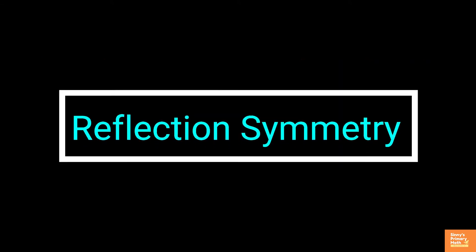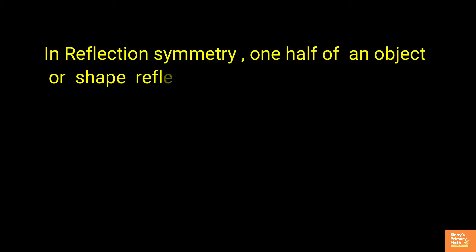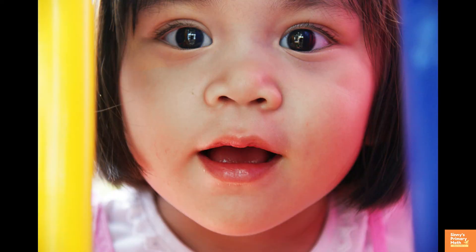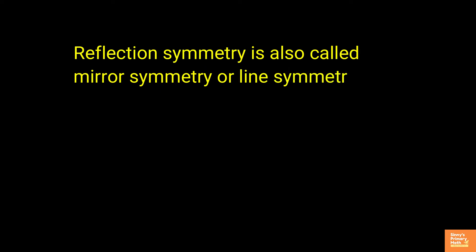Reflection symmetry. In reflection symmetry, one half of an object or shape reflects the other half. The best example, in general, human faces are identical on the left and right sides. Reflection symmetry is also called mirror symmetry or line symmetry.